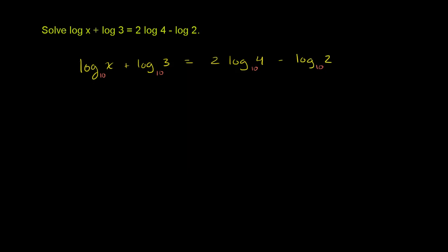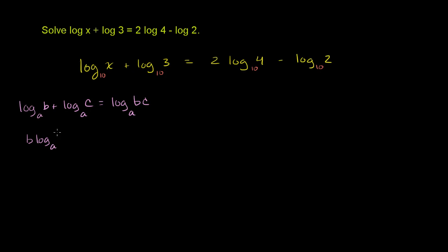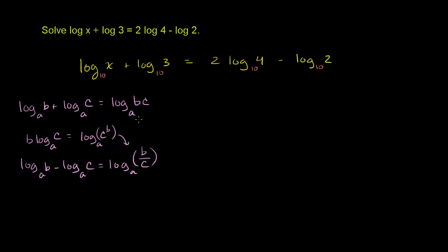Let's see what logarithm properties we can use. We know that log base a of b plus log base a of c equals log base a of bc. We also know that b times log base a of c equals log base a of c to the b power. And we know that log base a of b minus log base a of c equals log base a of b over c.